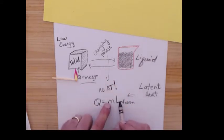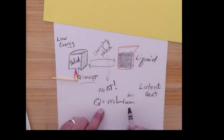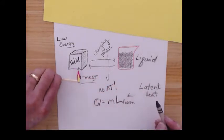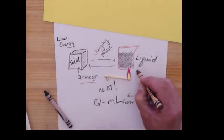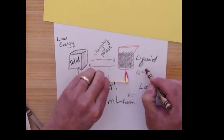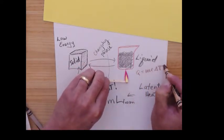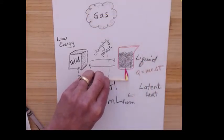This ML is the same for whether that liquid turns into a solid or solid turns into a liquid. And then if I start heating it up again, I get heat still going into there. Q equals MC delta T until finally it starts to boil.